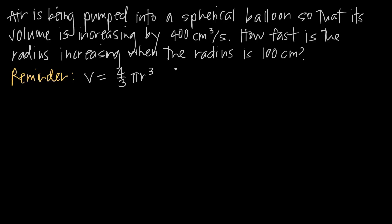Let's look at what information we've been given. We've been told that the volume is increasing by 400 cubic centimeters per second — in other words, the rate of change of the volume is positive 400 cubic centimeters per second. The rate at which volume is changing, we call dV/dt, which means the rate at which the volume is changing with respect to time. So dV/dt is equal to 400 cubic centimeters per second. We've also been told that the radius is 100 centimeters at the point in time we're interested in.